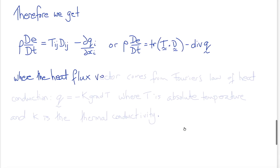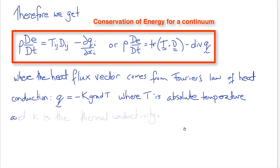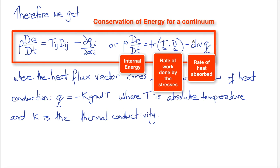The heat flux vector comes from Fourier's law of heat conduction, which states that q equals negative k times the gradient of temperature theta, where k is the thermal conductivity. This is the conservation of energy for a continuum. It includes three terms: the internal energy, the rate of work done by the stresses — derived from the work done by body and surface forces, simplified by application of conservation of linear momentum — and the rate of heat entering the system.